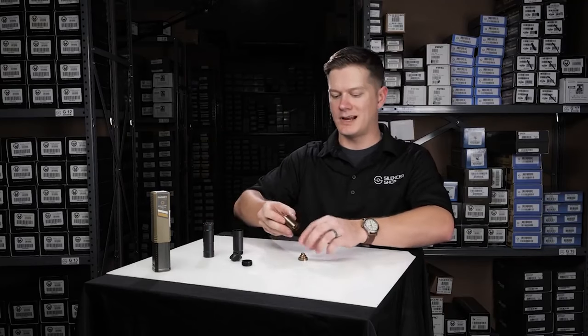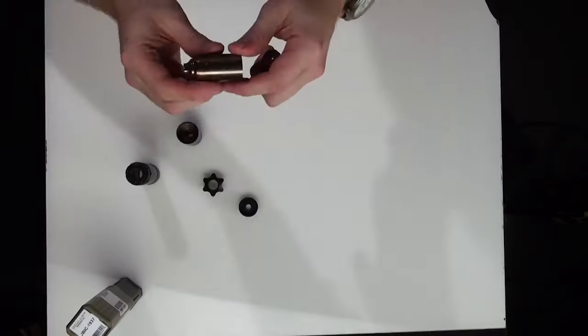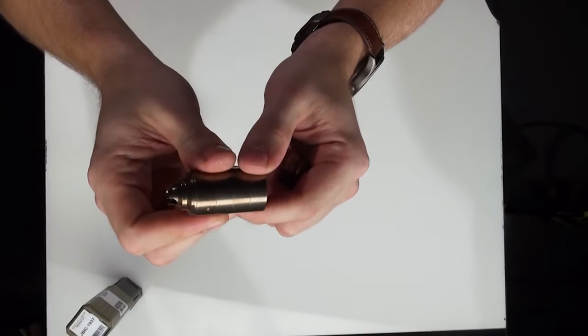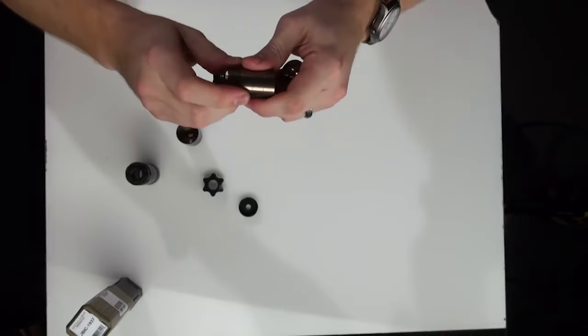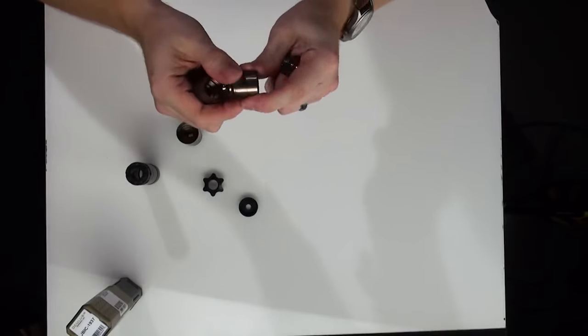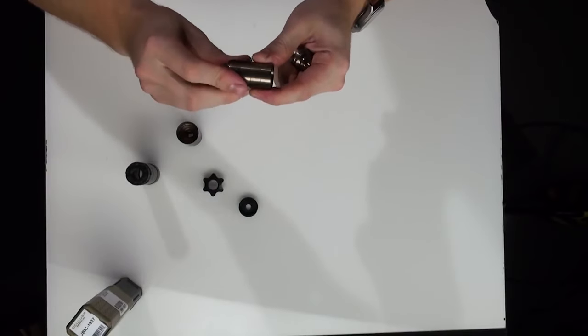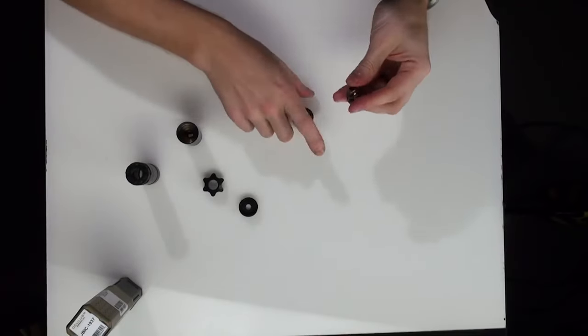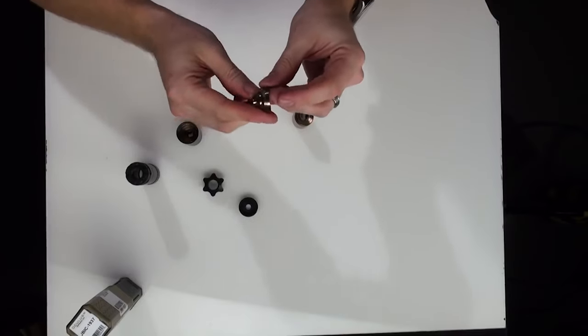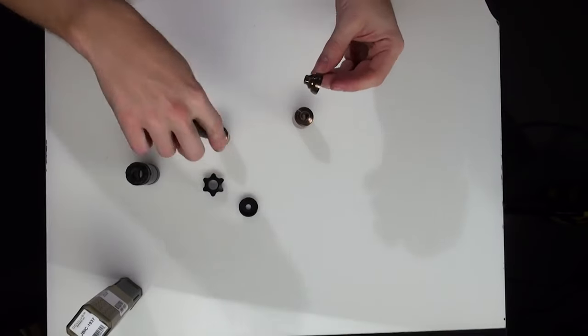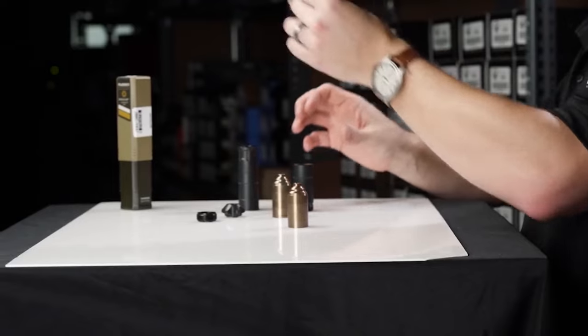A couple of things to note with the Rugged Oculus baffles: the blast baffle is engraved with a number one and is the only baffle of its kind. All the other follow-on baffles are identical and can be assembled in any order. You'll also notice the front baffle in both the main tube and the extension tube are a little bit shorter and need to be at the front of the stack.